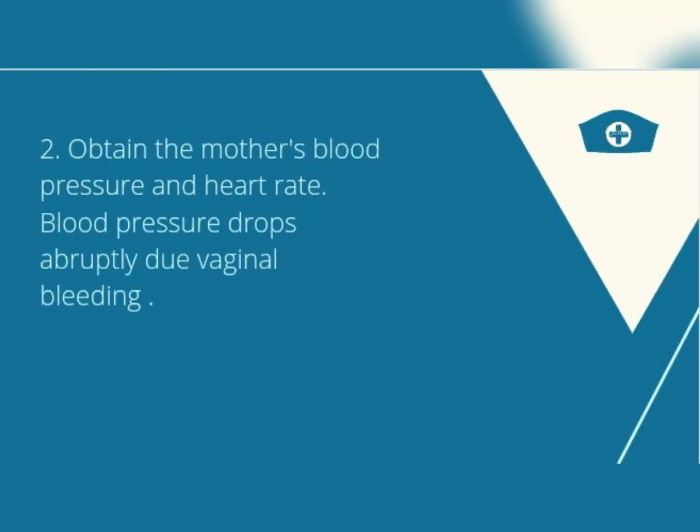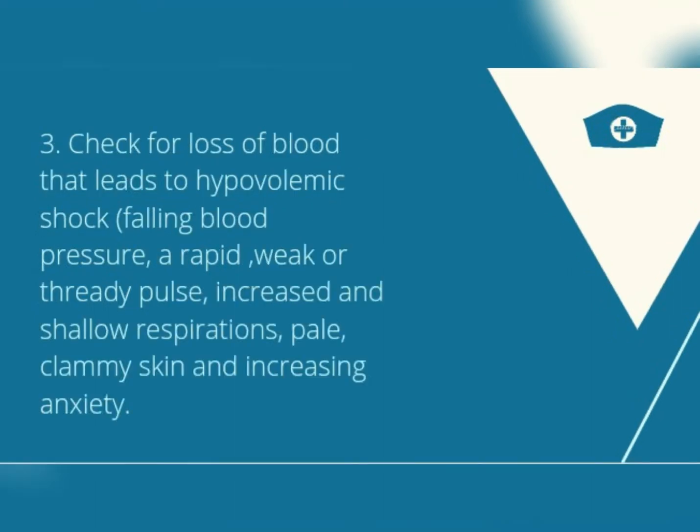Obtain the mother's blood pressure and heart rate. Blood pressure drops abruptly due to vaginal bleeding. Check for loss of blood that leads to hypovolemic shock: falling blood pressure, a rapid weak thready pulse, increased and shallow respirations, pale clammy skin, and increasing anxiety.